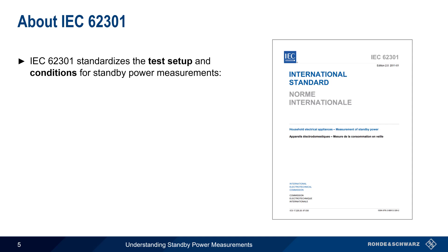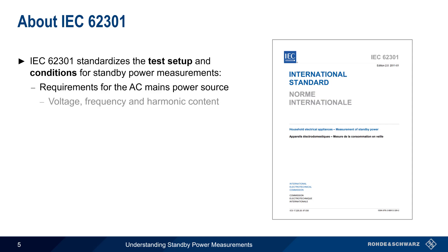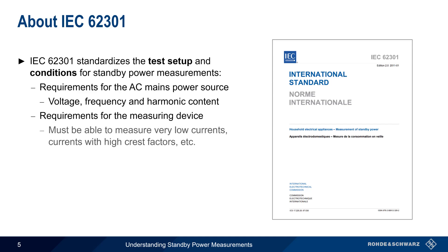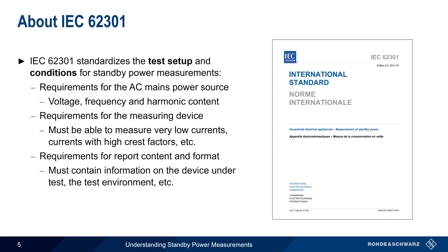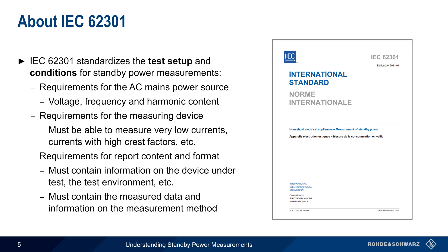IEC 62301 standardizes both the test setup and the test conditions for making standby power measurements. The main requirements covered by the standard fall into three categories. The first is requirements on the AC mains power source — for example, the voltage and frequency must be within 1% of the nominal values, and the AC waveform must be very sinusoidal, that is, without significant harmonic content. There are also requirements for the measuring device. The measuring device must be able to measure very low current, currents with high crest factors, etc. And lastly, there are requirements regarding how the results are reported. The test report not only has to contain information about the device under test and the test environment, but must also contain measurement data and information about how that data was obtained.